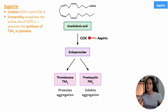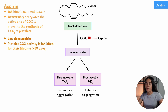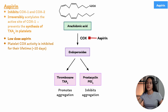Thromboxane produced downstream of cyclooxygenase is predominantly produced in platelets — your main source of thromboxane. Aspirin exerts its antiplatelet effects by inhibiting the cyclooxygenase in platelets, which prevents the synthesis of thromboxane A2. By inhibiting COX in platelets, aspirin prevents the production of thromboxane A2, because if you don't produce the intermediates that are the products of COX, you obviously can't produce the end product of thromboxane.